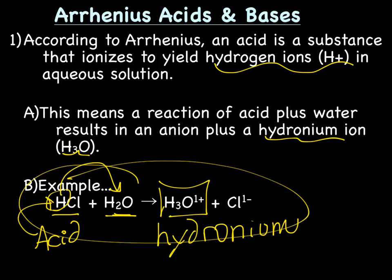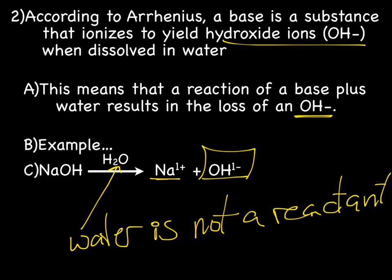If you go back to the acid definition, you'll notice that there's an actual change in both the acid and the water. In the Arrhenius definition of an acid, an acid reacts with water to produce hydronium and an anion. According to Arrhenius, a base dissolves in water, the water doesn't change, to produce a cation and an OH.